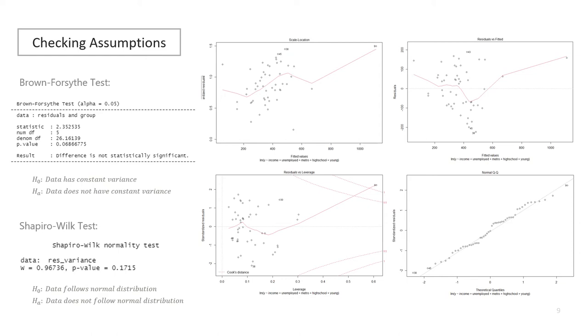So as a summary of the assumption checking, the data passes the Brown-Forsythe test, passes the Shapiro-Wilk test, it does violate the linearity assumption, and does have a potential outlier. In order to correct the linearity of the model, we need to look into transforming one or some of the predictors.